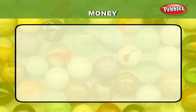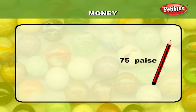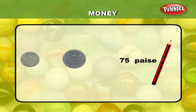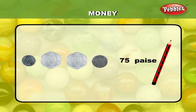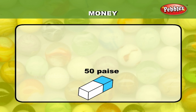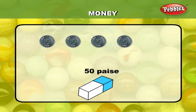Let us see some examples to learn more about the value of money. When you want to buy an eraser worth 50 paise, we can use two 25 paise coins which equals 50 paise, or two 20 paise coins and one 10 paise coin which is also equal to 50 paise, or we can use five 10 paise coins.